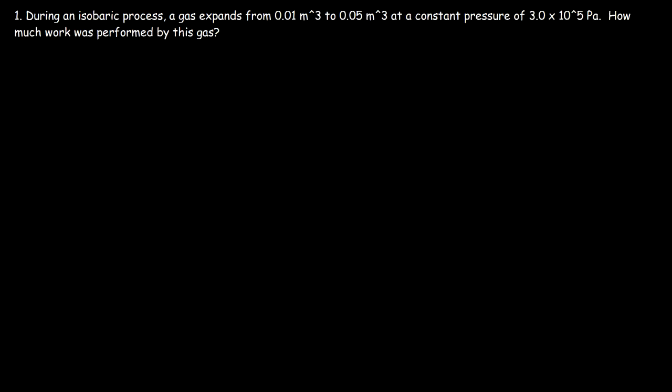In this video we're going to talk about how to solve thermodynamic problems associated with isobaric processes. In this example we have a gas that expands from 0.01 to 0.05 cubic meters at constant pressure. An isobaric process is one that occurs at constant pressure. How much work was performed by this gas?